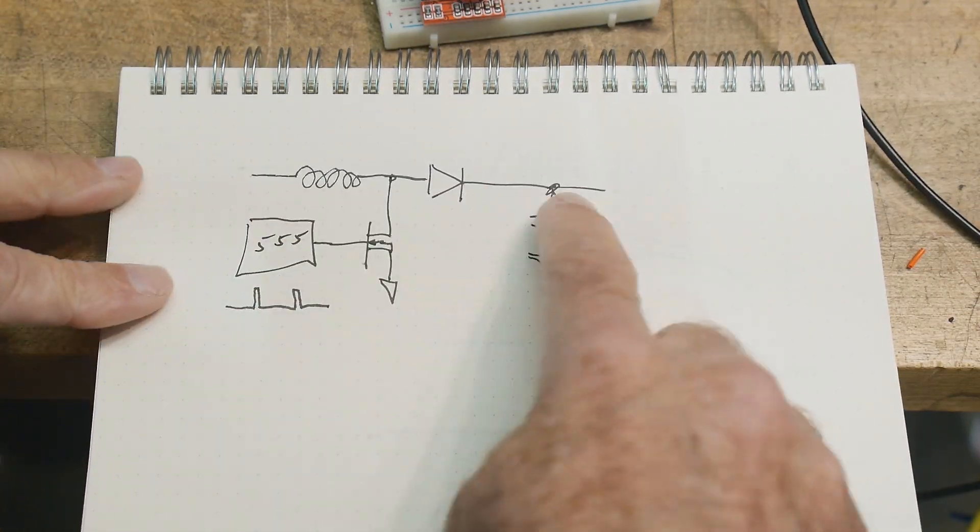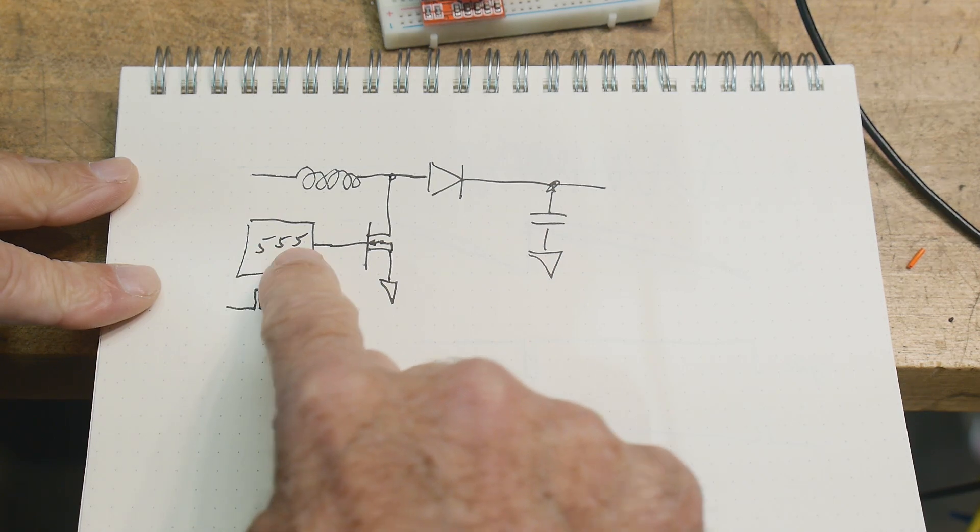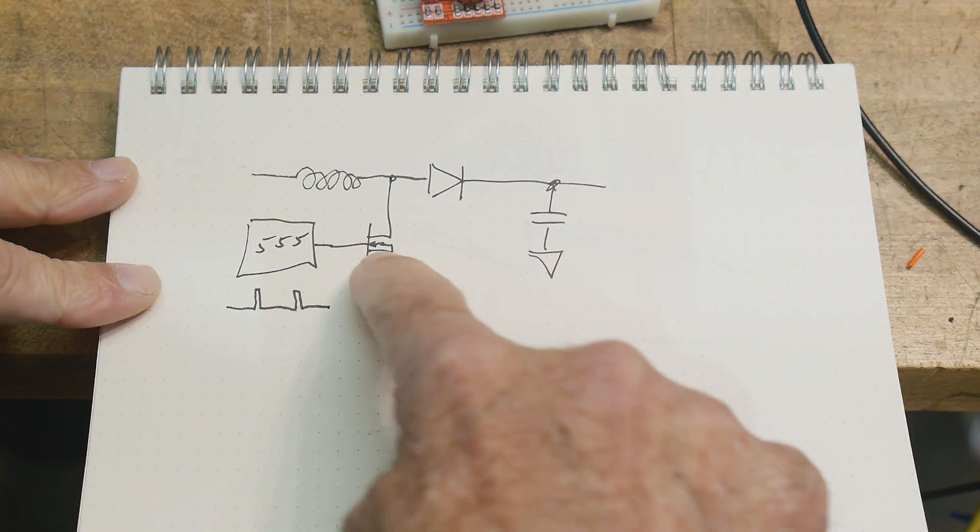So let's do that. We're going to have the same circuit, and this time we're going to put in a 555 timer and an N-channel FET.